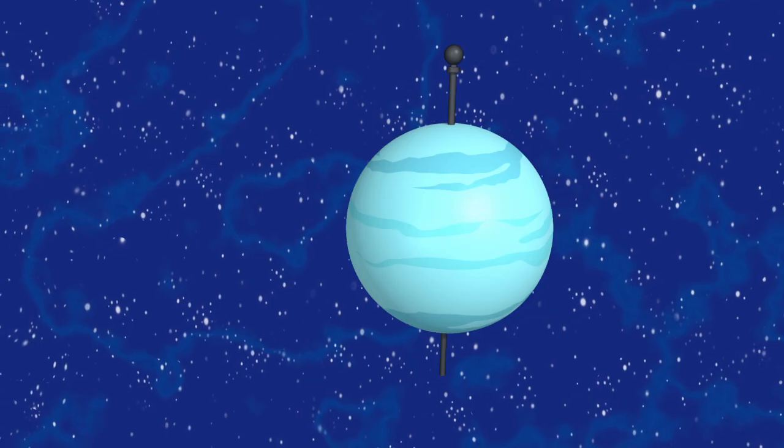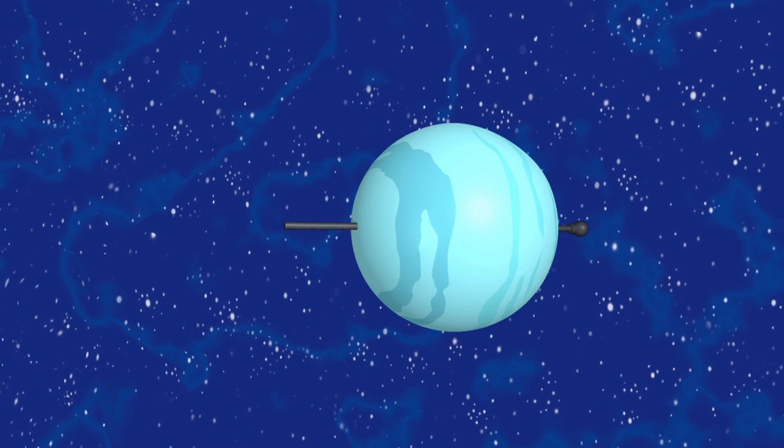How did this all happen? One theory is that a body the size of our Earth collided with Uranus a long time ago, radically throwing off its rotation.